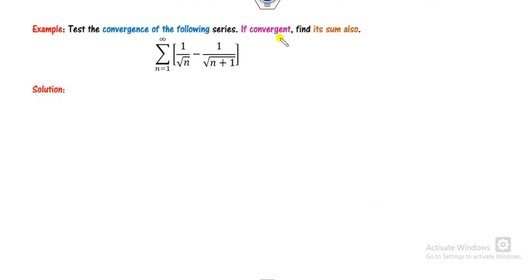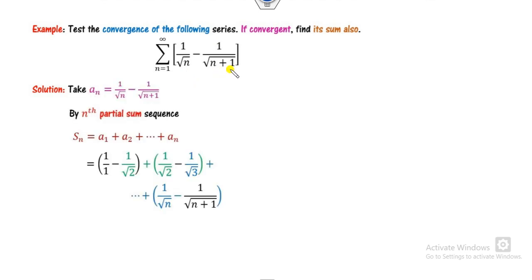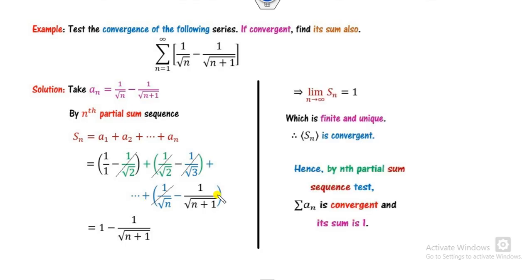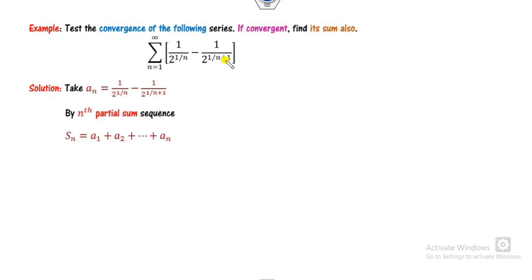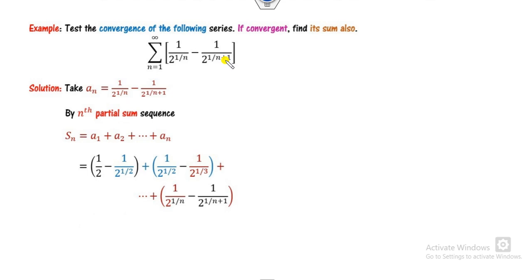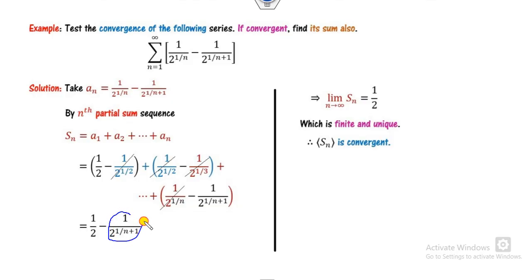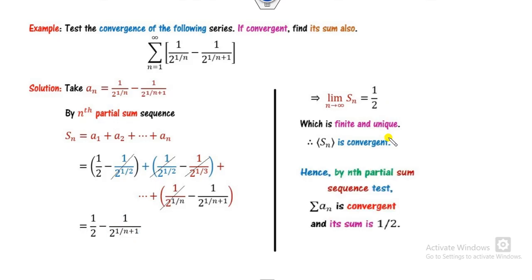Example 7: n and n+1 are telescopic consecutive terms. Finding the nth partial sum sequence gives a finite and unique limit — it is a convergent sequence and series. Example 8: we have 2^(1/n) and 2^(1/(n+1)) — both consecutive terms forming a telescopic series. Evaluating the limit as n approaches infinity, this portion goes to 0, giving limit = 1/2, which is finite and unique, confirming convergence.